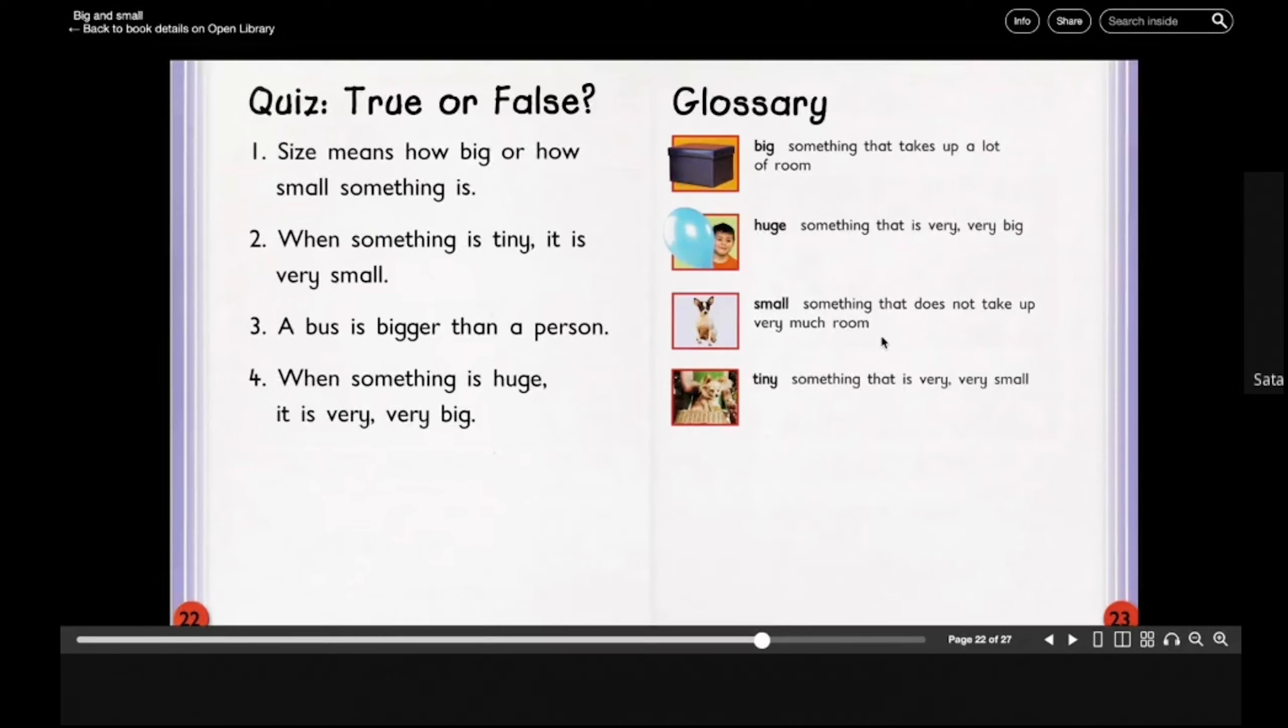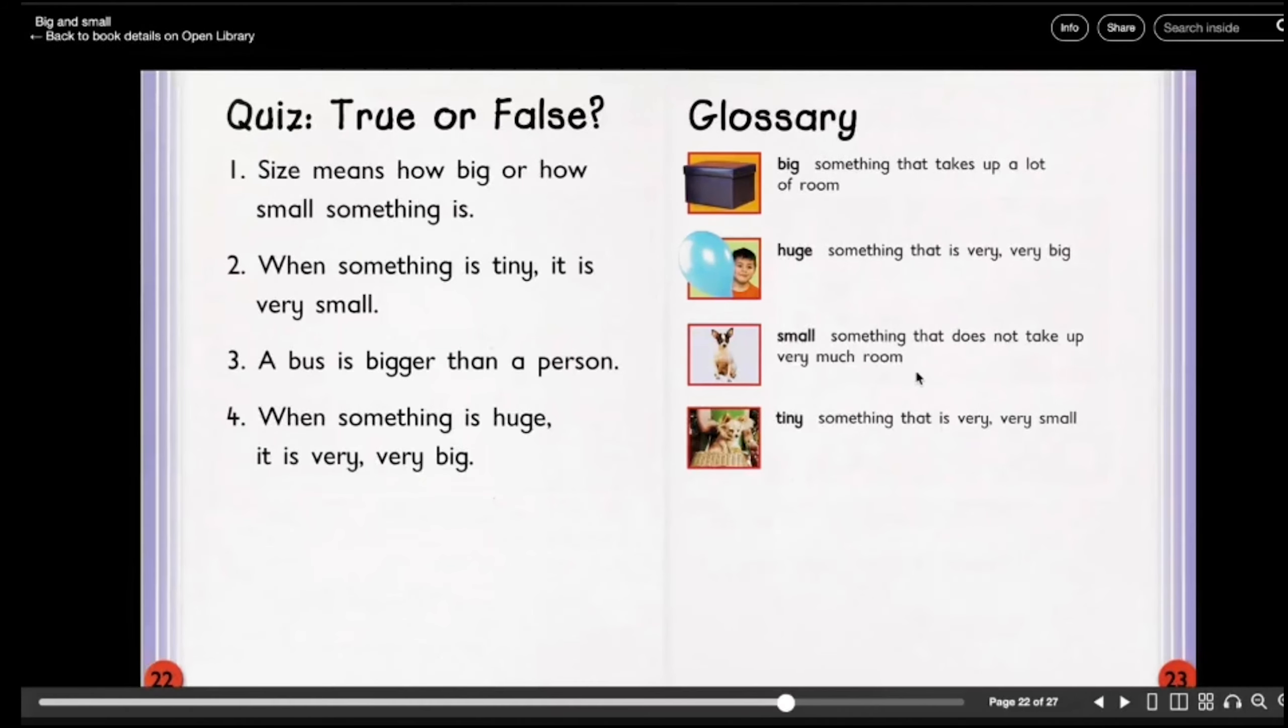Number three, a bus is bigger than a person. Three for three. If you said true, then you are correct again. Number four, when something is huge, it is very, very big. That is four in a row. The answer for that one is true.